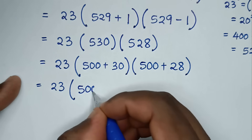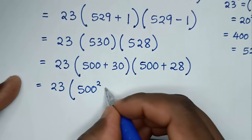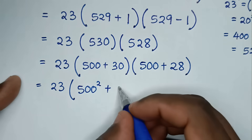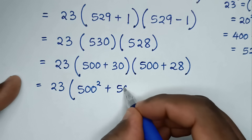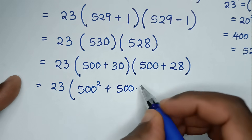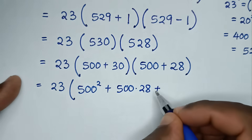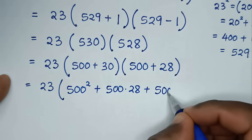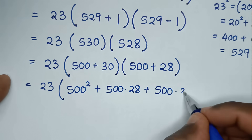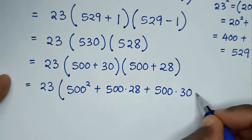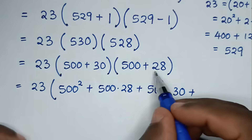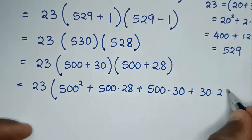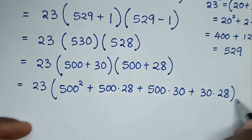Then expanding: it will be 500 squared plus 500 times 28 plus 500 times 30, plus 30 times 28, bracket.